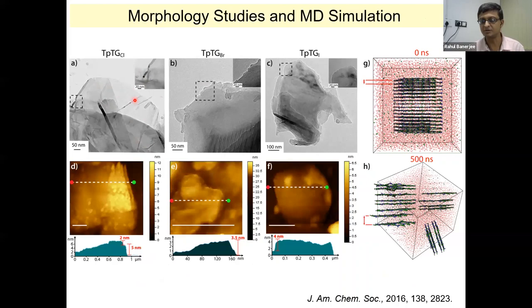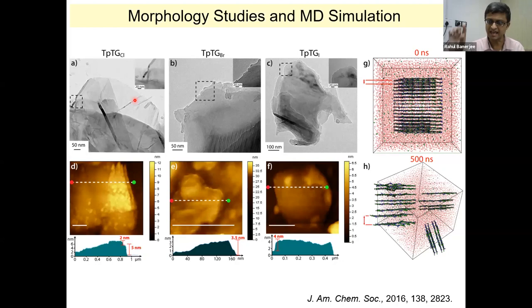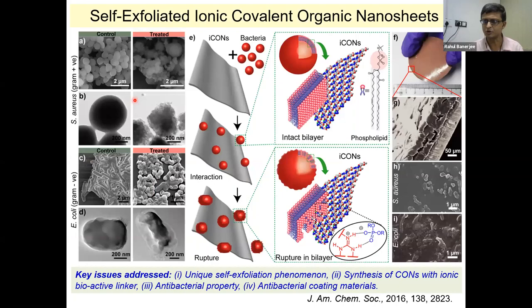We did an AFM study by drop-casting on an AFM grid. I thought the layers would stack back, but they didn't. We could confirm layers of around 2 to 5 nanometers in dispersion. It is still not very precise — there is an error of around 2 to 4 nanometers — but it was pretty satisfactory to see that they could dislocate so nicely, even with a very mild force.